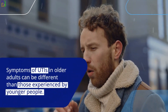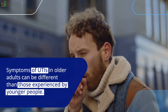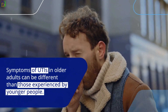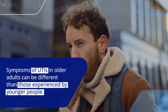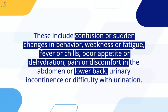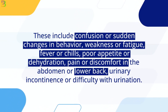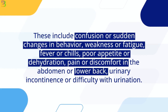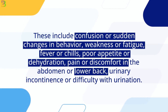Symptoms of UTIs in older adults can be different from those experienced by younger people. These include confusion or sudden changes in behavior, weakness or fatigue, fever or chills, poor appetite or dehydration, pain or discomfort in the abdomen or lower back, and urinary incontinence or difficulty with urination.